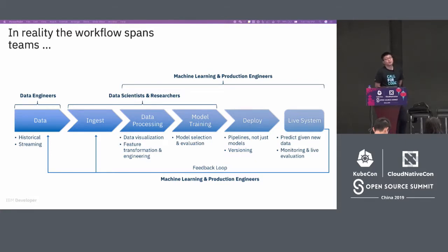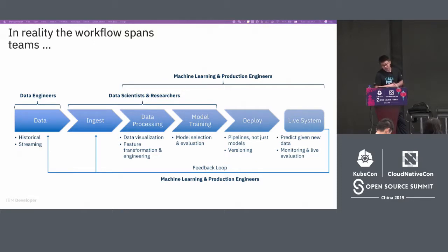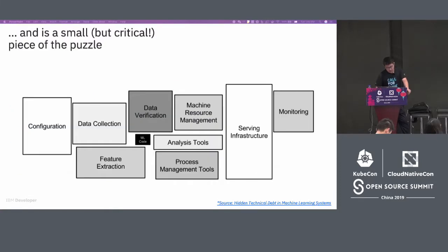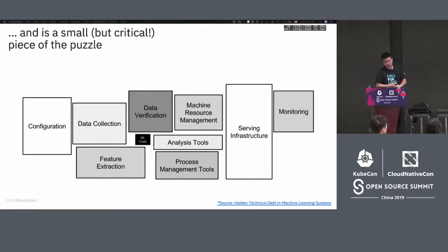Then we train the model. The model might have different architectures or structures, and you need to choose among them. You might have multiple versions of the model. You need to control the traffic and do A/B testing, etc. After the model goes live, you need to think about how well it works, its usability. It involves multiple teams, not only one team, and it's quite complicated.